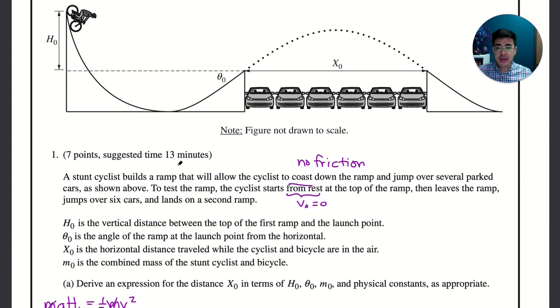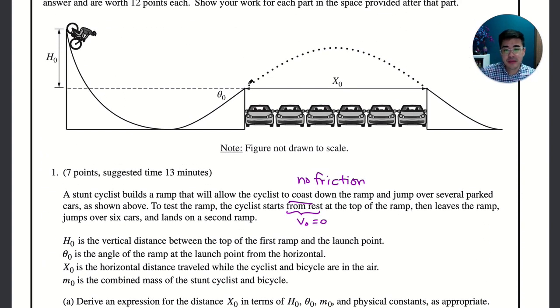That part's not too bad but then the confusing part comes here. When we have the velocity leaving the ramp, the velocity is happening at an angle and that angle happens to equal theta naught. We need to split up our velocity into its components. This one's the opposite side so this will be v sine theta naught, and then this will be v cosine theta naught. This is the pretty standard decomposition of a right triangle.